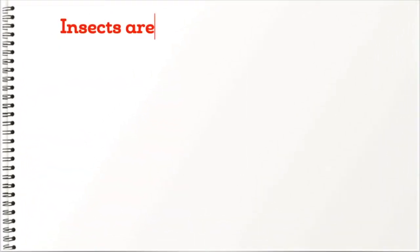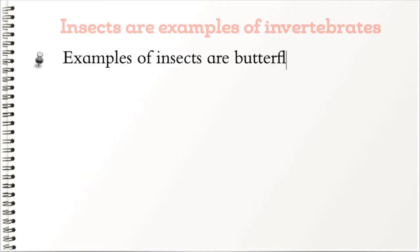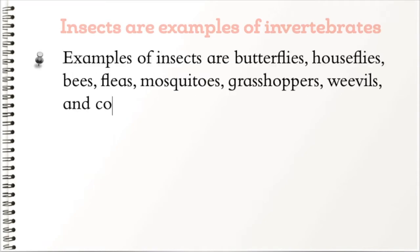Insects are examples of invertebrates. Examples of insects are butterflies, houseflies, bees, fleas, mosquitoes, grasshoppers, weevils, and cockroaches.